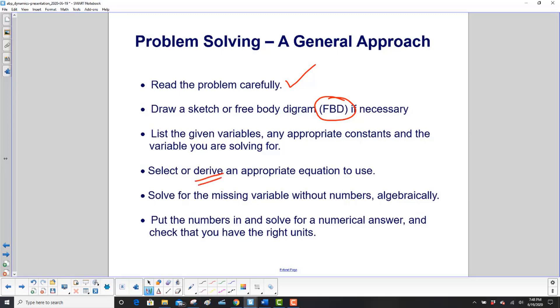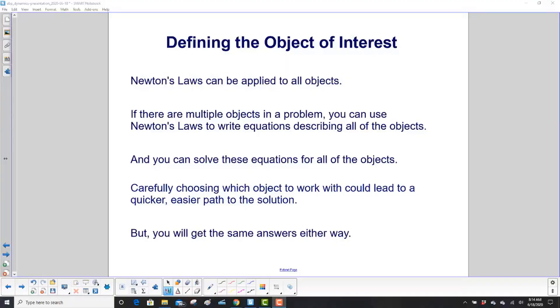Select or derive an appropriate equation to use, then solve for the missing variable without numbers. Notice we haven't talked about numbers yet - we do it with algebra. Then finally put the numbers in and solve for the numerical answer and check that you have the right units.